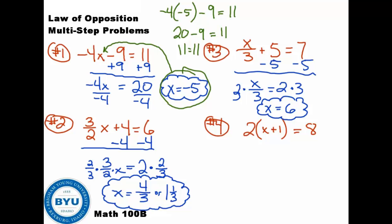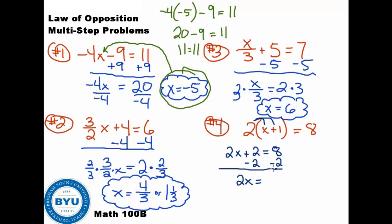What about number 4? I didn't teach this yet — this was an introduction to move into our next part of the video. You could distribute the 2 in first. Doing that gives 2x plus 2 equals 8. Then use the law of opposites: minus 2 to both sides gives 2x equals 6, then divide both sides by 2 to get x equals 3. So when you have parentheses in a problem, make sure to distribute first, then use the law of opposites to solve.